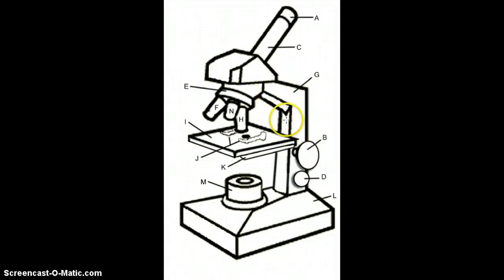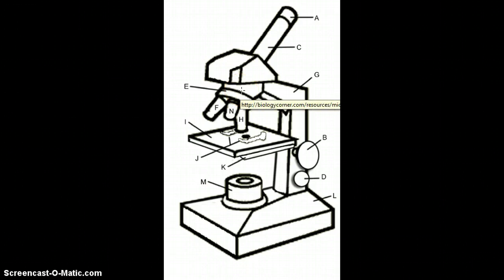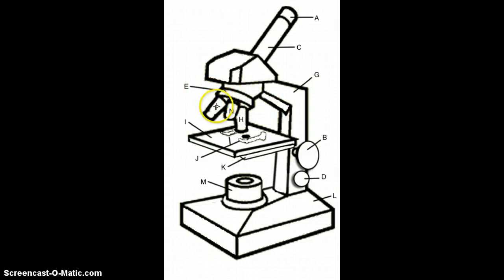E is the nosepiece. F is called the low power objective times 10, so it can zoom up times 10. You can rotate that nosepiece and point them at the stage through that little hole.